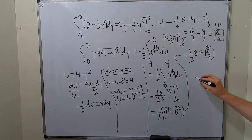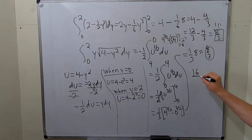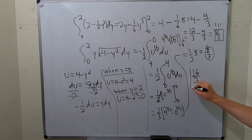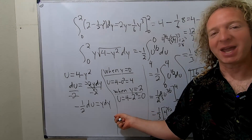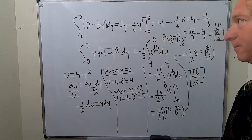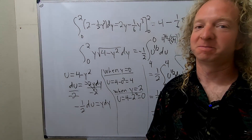Both integrals give 8 thirds — they're exactly the same! So the final answer is 8 thirds plus 8 thirds, which equals 16 thirds. I hope this video has been helpful. Take care.